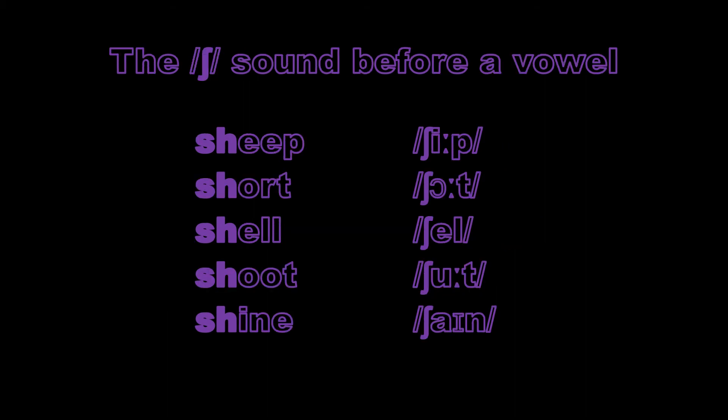The sh sound is very commonly found before vowels, such as in these example words: sheep, short, shell, shoot, shine.